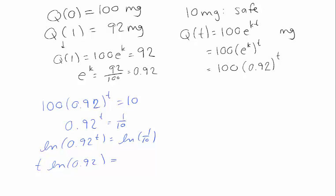And since 1 over 10 is just 10 to the minus 1, I can write this as minus log 10 just to make things a little easier to myself. And so that means that the time at which it's safe is minus log 10 divided by log of 0.92.